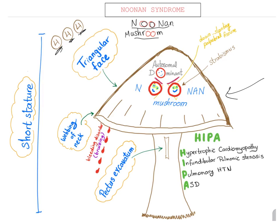Let's start with the four major items. First, we have short stature — of course, because the mushroom is short. And then we have the triangular face; look at the cap of the mushroom, it's triangular. And then we have webbing of the neck — that's the web of the neck from here. And also we have pectus excavatum, from the stem of the mushroom.